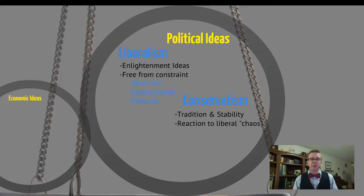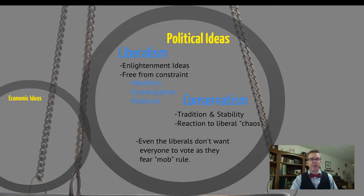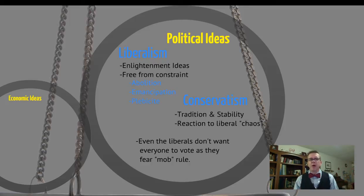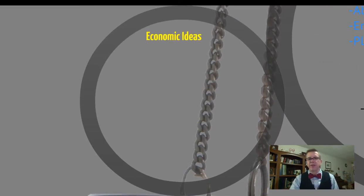Conservatism, however, looks at tradition and stability. This is a reaction to the liberal chaos, especially caused by the French Revolution and all the damage and wars caused by it. Returning to tradition and stability means returning to legitimate monarchs — think the Congress of Vienna — and trying to set up absolute rulers to bring back stability. However, even the liberals aren't as liberal as we might consider today, because even they only want middle-class landowning males to vote. They feel that uneducated people will lead to mob rule, and they're definitely not in favor of that.